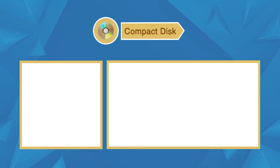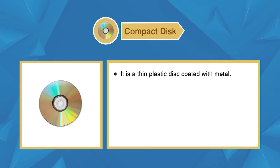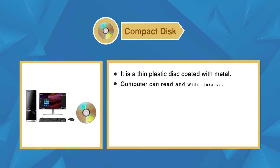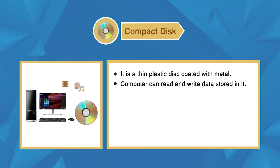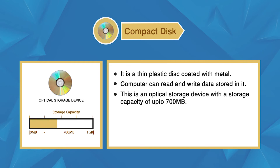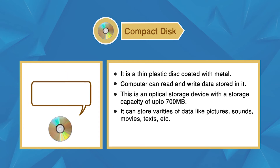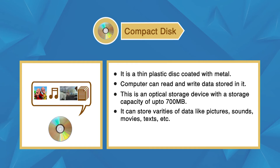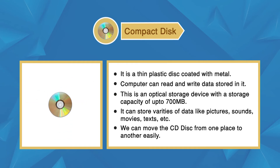Compact disk is a plastic disk coated with metal. A computer can read or write stored data on it. It is an optical storage device with a capacity of 700 MB. Various types of data can be stored on it, like pictures, sounds, movies, and more. It is portable and can be moved from one place to another.